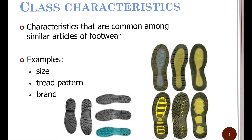Quite often footwear prints are going to be class evidence, because a lot of them have class characteristics. They're common among similar articles of footwear. For example, tennis shoes kind of all have the same general appearance, and high heels again have the same general appearance — they're going to leave similar impressions if you step into something.